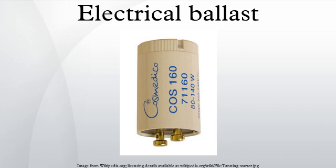Some ballast resistors have the property of increasing in resistance as current through them increases, and decreasing in resistance as current decreases. Physically, some such devices are often built quite like incandescent lamps. Like the tungsten filament of an ordinary incandescent lamp, if current increases, the ballast resistor gets hotter, its resistance goes up, and its voltage drop increases. If current decreases, the ballast resistor gets colder, its resistance drops, and the voltage drop decreases. Therefore the ballast resistor reduces variations in current despite variations in applied voltage or changes in the rest of the circuit. These devices are sometimes called bariters, and were used in the series heating circuits of 1930s to 1960s AC/DC radio and TV home receivers.